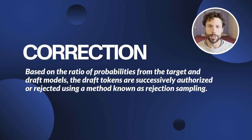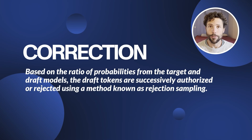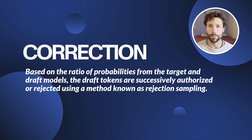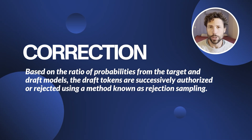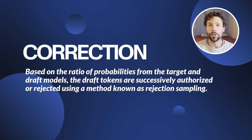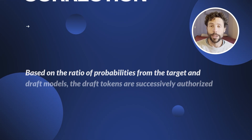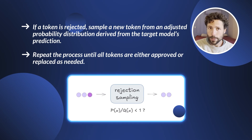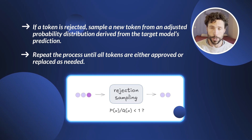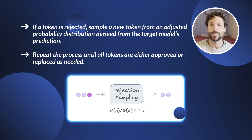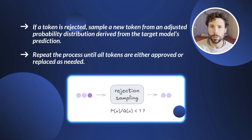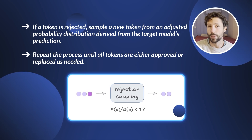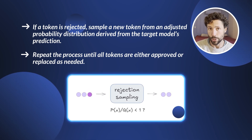The third and final step is correction. Following a technique called rejection sampling, the draft tokens are sequentially approved or rejected based on the ratio of probabilities from the target and draft models. If a token is rejected, the process stops, and the next token is sampled from an adjusted distribution derived from the target model's prediction.